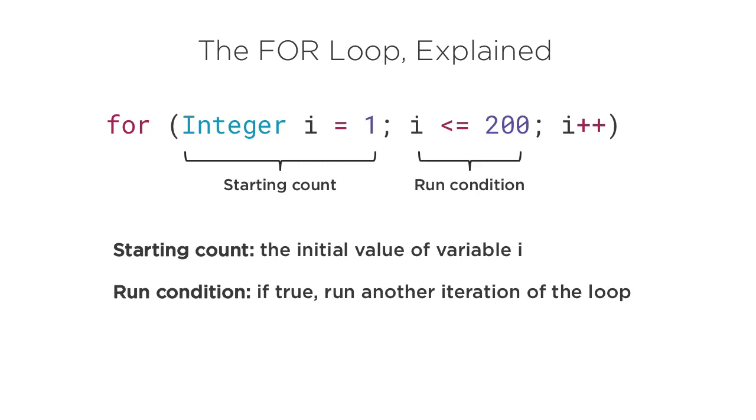Next, we set the run condition. As long as this condition evaluates to true, your loop will run its next iteration. You set this condition less than or equal to the number of times you want your loop to run. So in this case, we want our loop to run exactly 200 times. So we say, keep running this loop as long as i, the iteration variable, is less than or equal to 200.